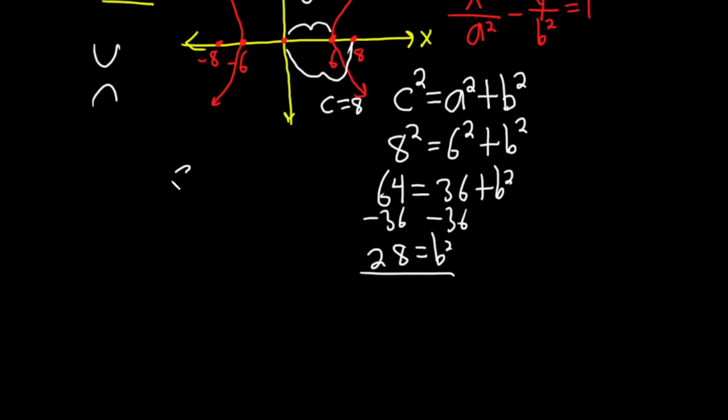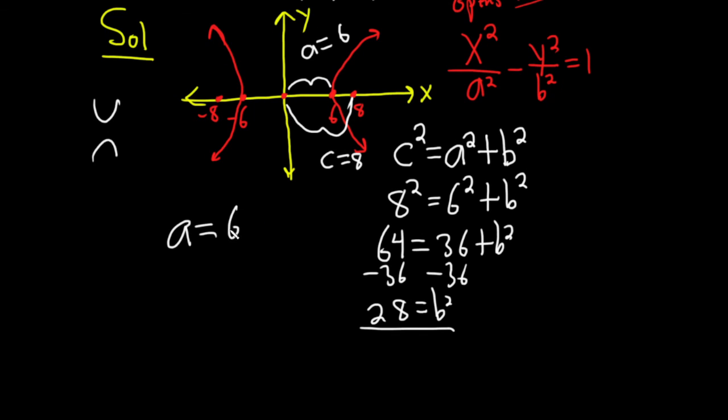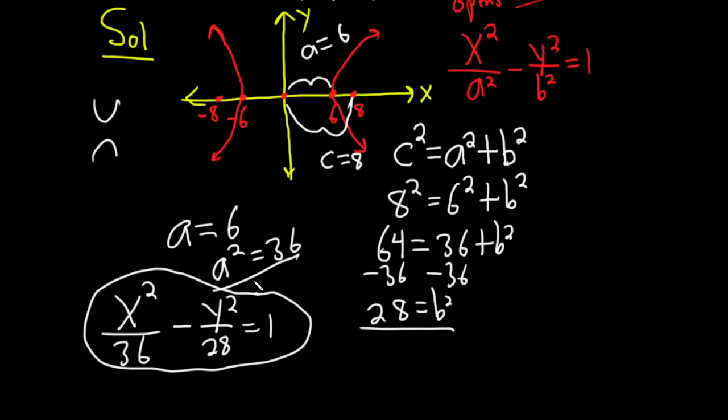We know that a is 6. So a² is 36. So we've got a². We've got b². So the final answer will be x² over a², which is 36, minus y² over b², which is 28. And that's equal to 1. And that would be the equation of the hyperbola.